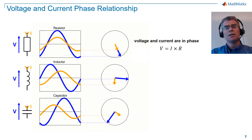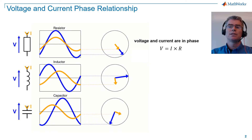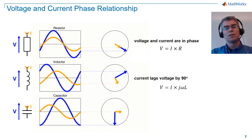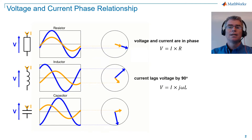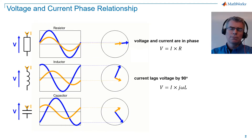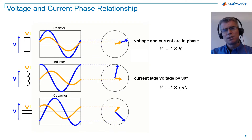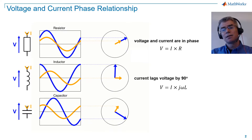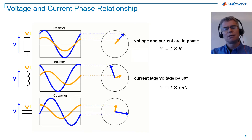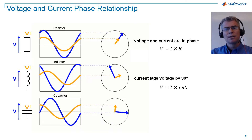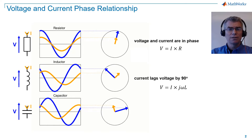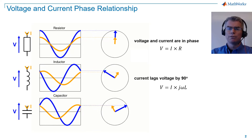For an inductor, current lags voltage by 90 degrees, and the relationship between voltage and current is described by V equals I times J omega L, where J is the complex operator, omega is the system frequency, and L is the inductance. The 90 degrees phase lag is clearly seen in the vector representation, where the current vector is 90 degrees behind the voltage vector relative to the direction of rotation.